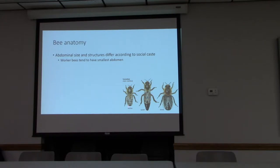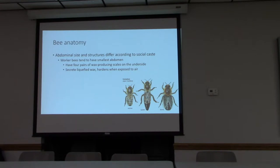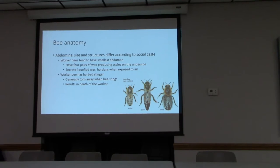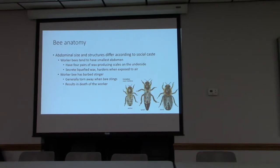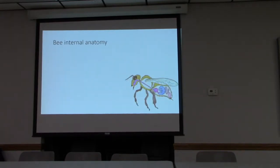Worker bees have the smallest abdomen. They also have four pairs of wax-producing scales on the underside — they secrete a liquefied wax that hardens when exposed to air, but this only occurs in younger bees. The worker bee does have a barbed stinger, which is torn away when she stings, resulting in her death. So typically bees aren't out to sting you — it's a death sentence for them. They have to feel genuinely threatened.